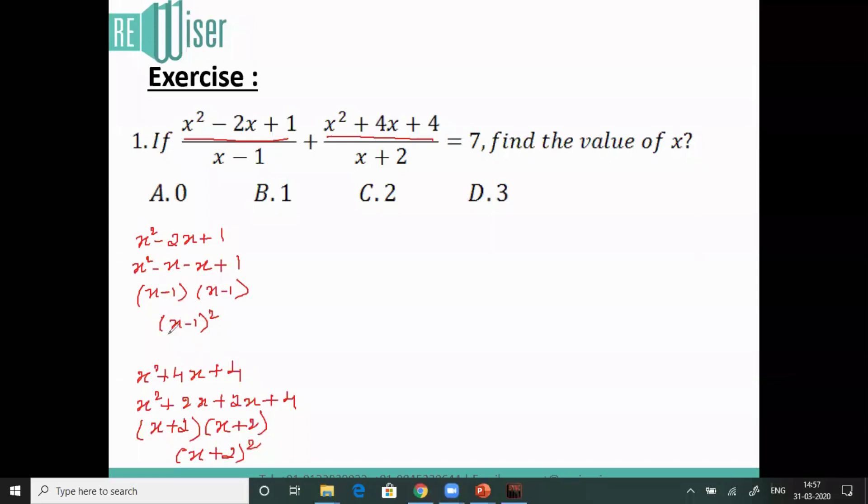Now by replacing x minus 1 whole square and x plus 2 whole square in these places correspondingly, it will give me x minus 1 whole square divided by x minus 1 plus x plus 2 whole square divided by x plus 2, which equals 7. I can cancel out x minus 1 and x plus 2, and the squares will get cancelled out.